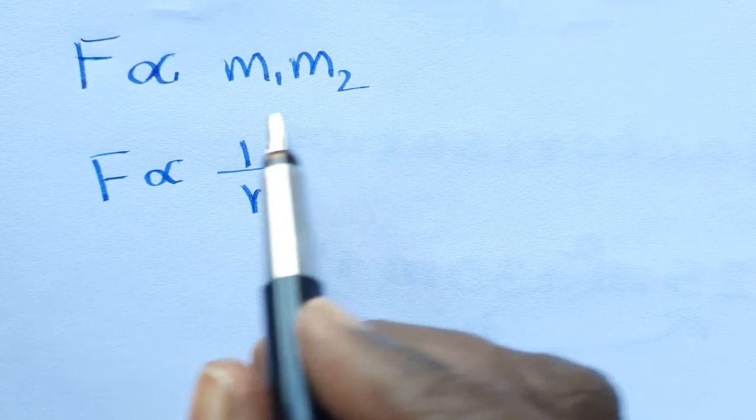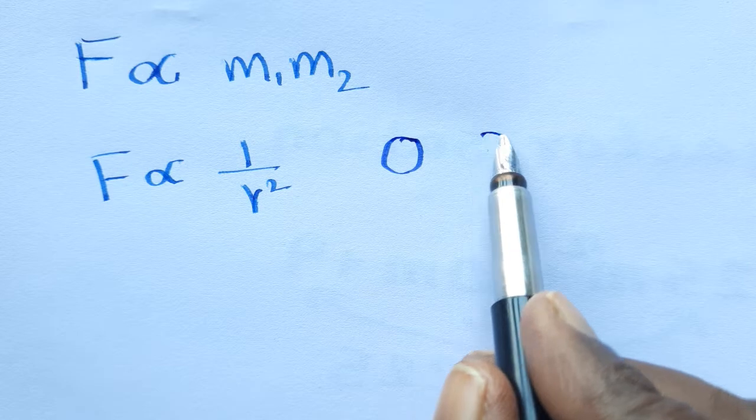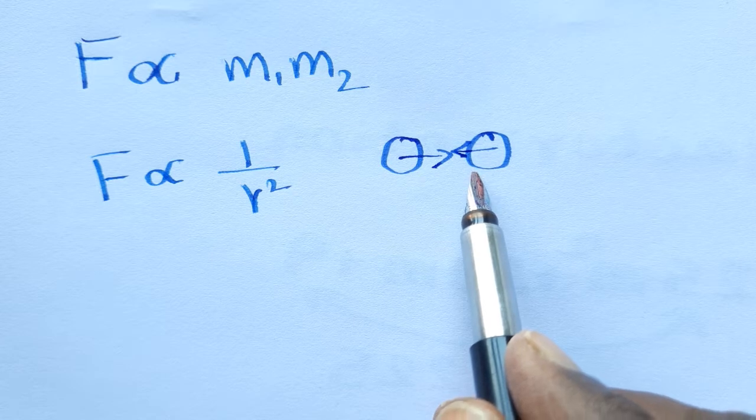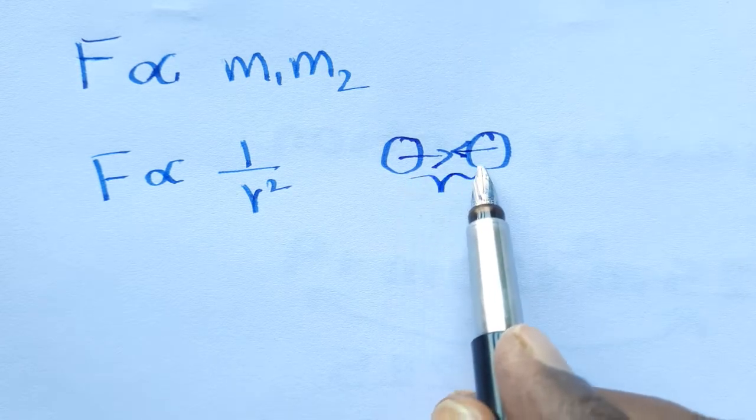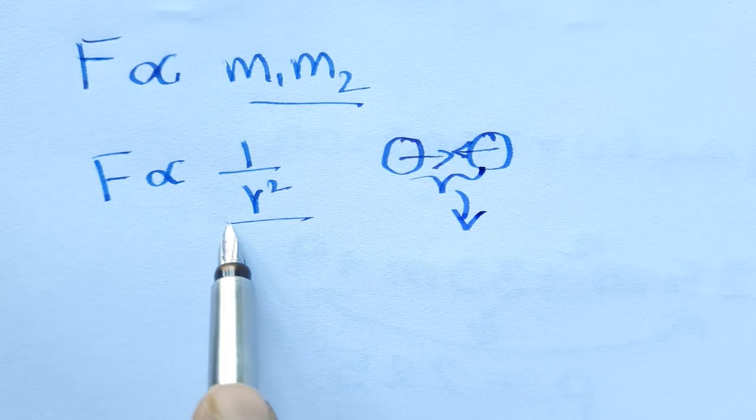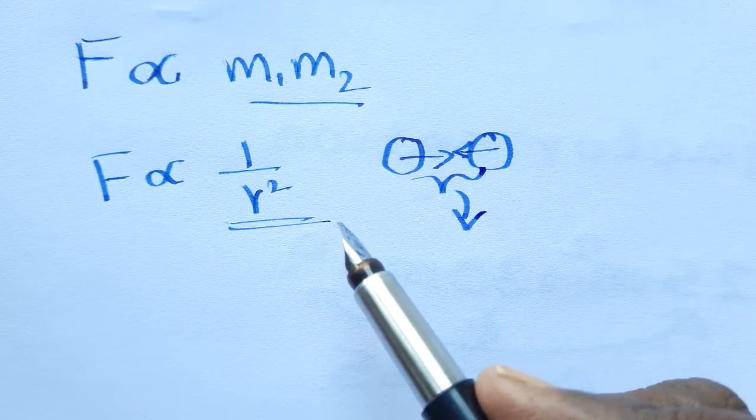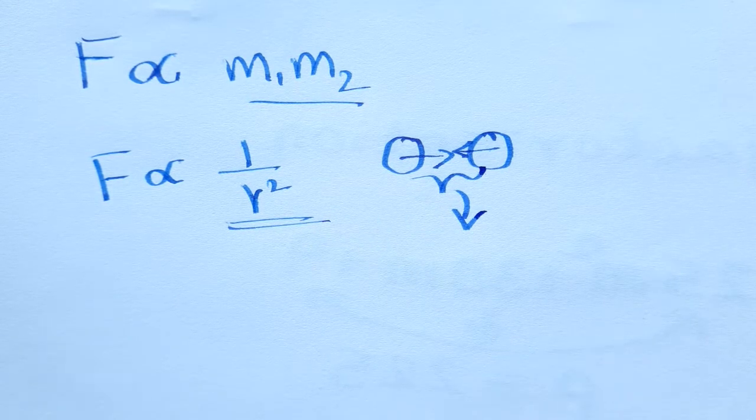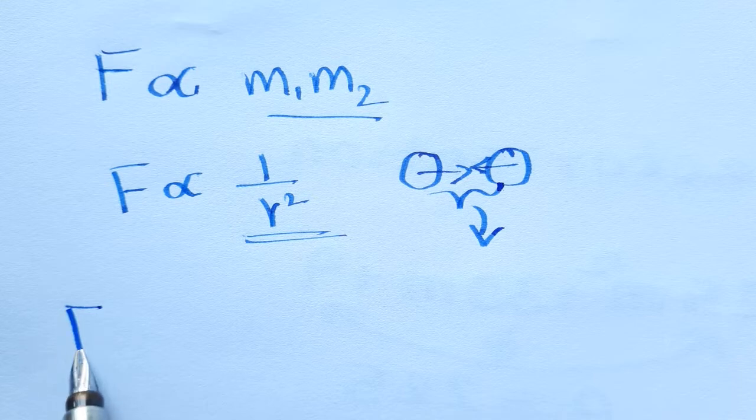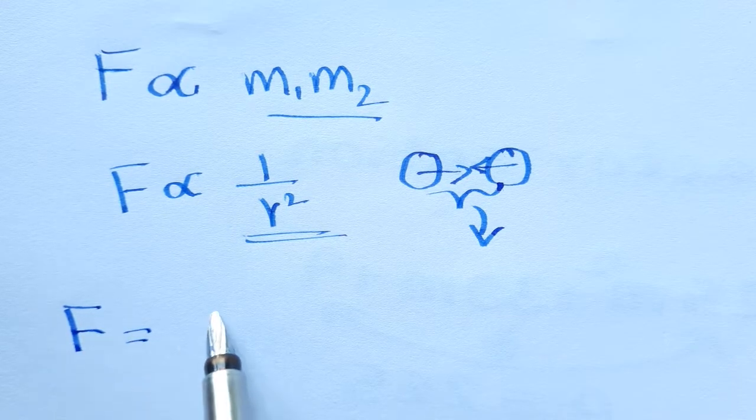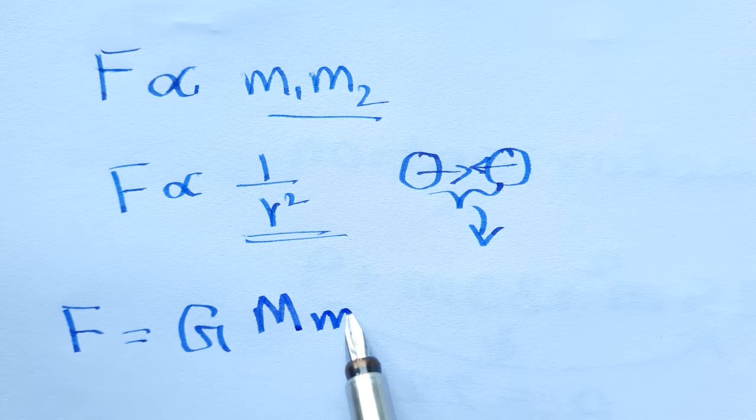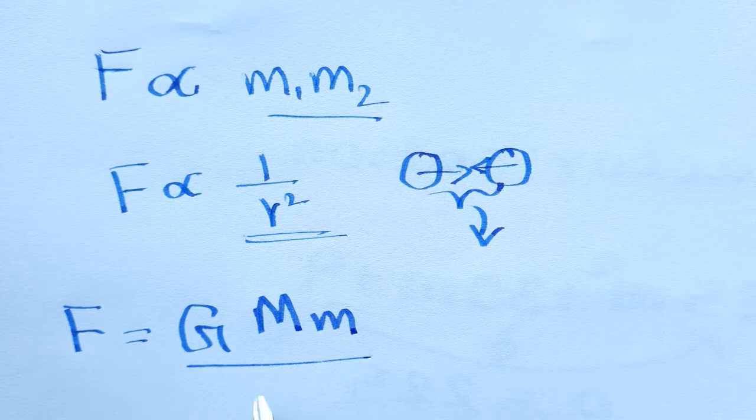Let it be M1 and M2, mass of the objects, two objects. They are attracting each other in the ratio of the product of their masses and inversely proportional to the distance squared. That's all. From that we get the derivation: F is equal to G constant, capital M, small m, the whole divided by R square.